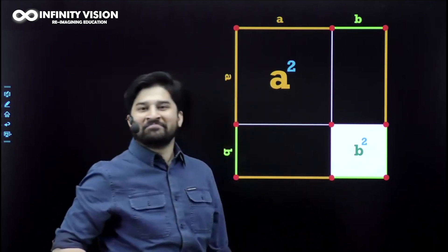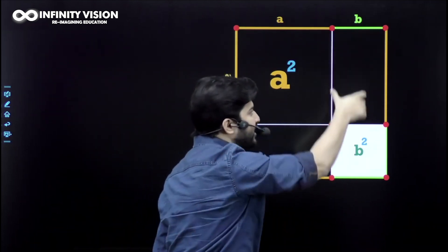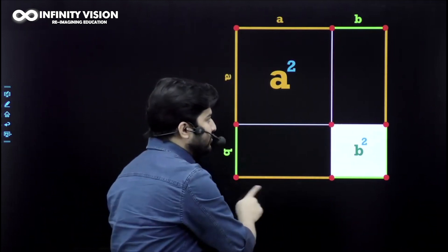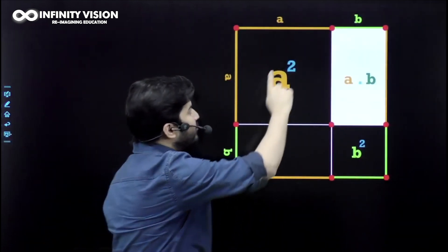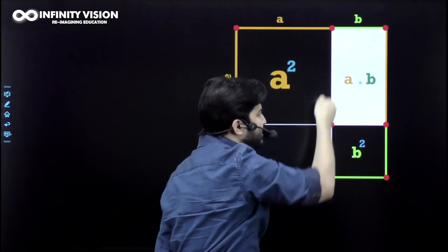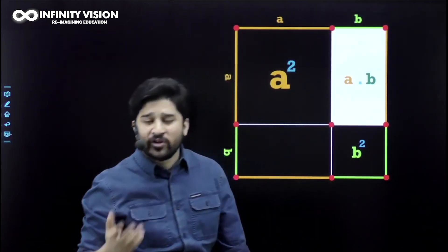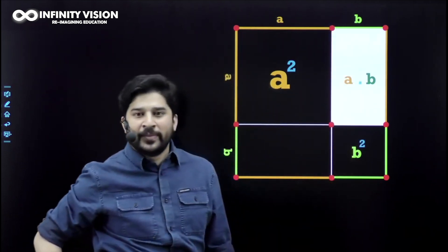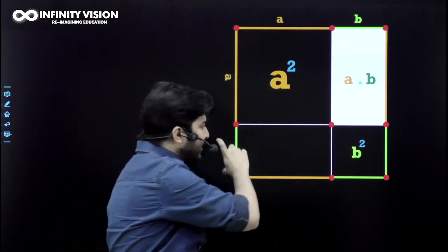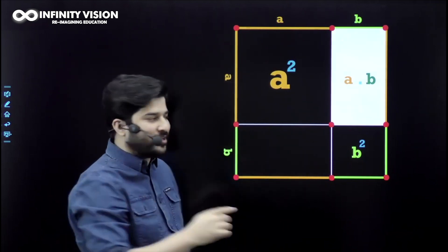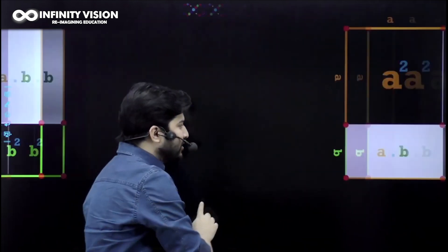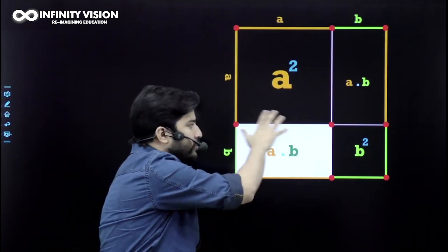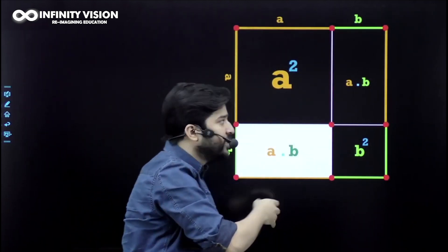Now let's find the area of the vertical rectangle — it has breadth b and length a, so its area is a times b. The horizontal rectangle also has length a and breadth b, so its area is also a times b, that is ab.